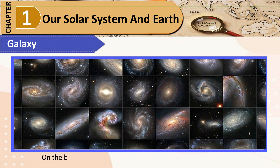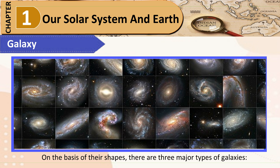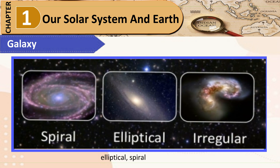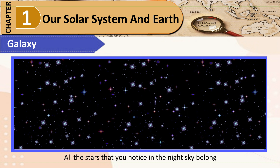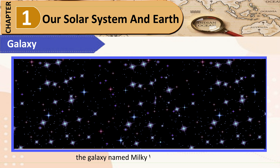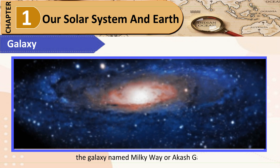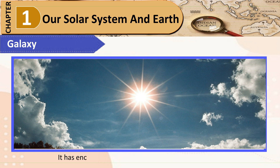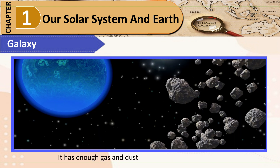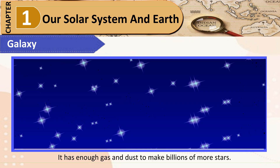On the basis of their shapes, there are three major types of galaxies: elliptical, spiral, and irregular. All the stars that you notice in the night sky belong to the galaxy named Milky Way, or Akash Ganga. It has hundreds of billions of stars including the Sun, and it has enough gas and dust to make billions more stars.